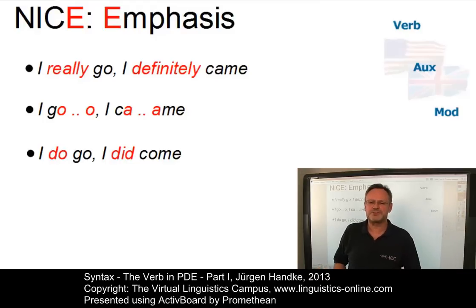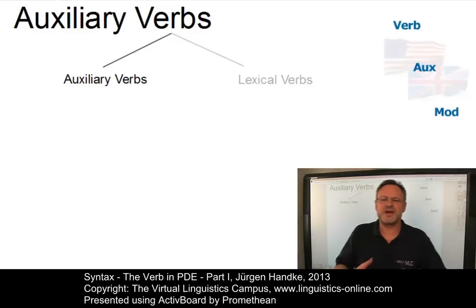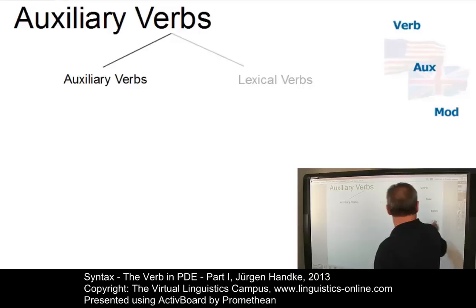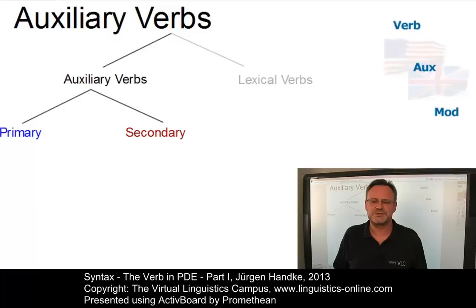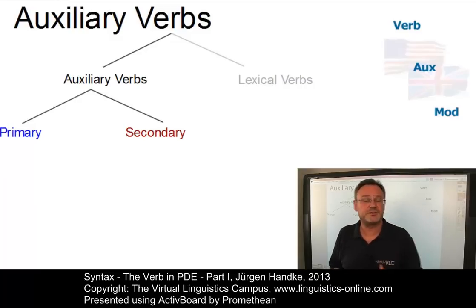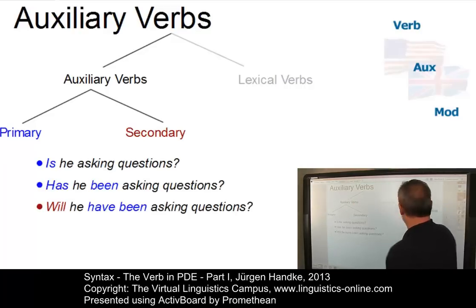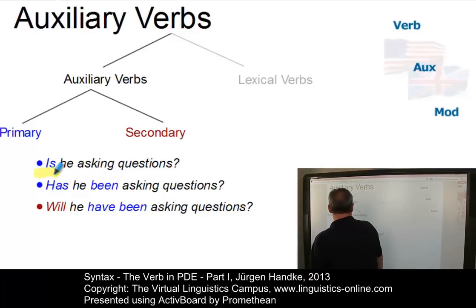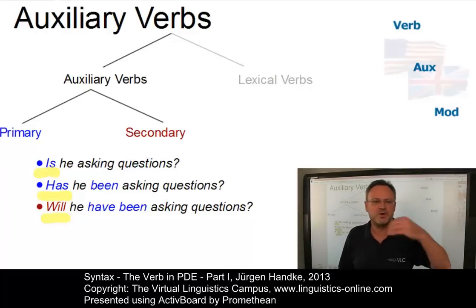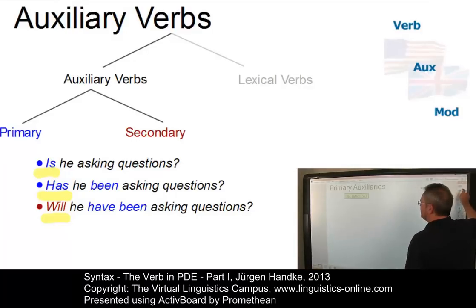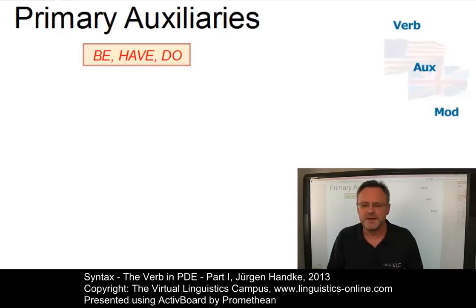Let us now look at the auxiliary verbs in more detail. Auxiliary verbs have a helping function within a sentence. They constitute a closed class of words and can be subdivided into primary auxiliaries and secondary auxiliary verbs. Although auxiliary verbs have different functions within the verb group, they have one syntactic function in common: they act as the operator when they occur as the first verb of a finite verb group. Examples: 'Is he asking questions?', 'Has he been asking questions?', 'Will he have been asking questions?' The three verbs BE, HAVE, and DO are the primary auxiliary verbs.